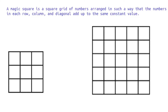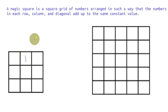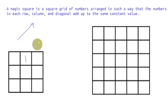Let us understand this with the help of an example. We'll start with the 3 by 3 magic square. We'll place 1 in the center of the first row. Then we'll try to move up and right. When we try to move up and right, we are moving out of the square, so we'll wrap down and write 2 over there.